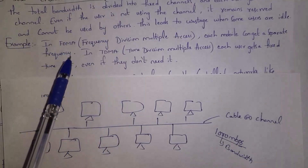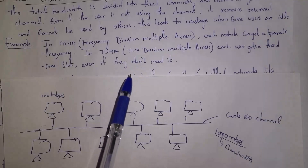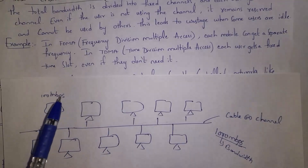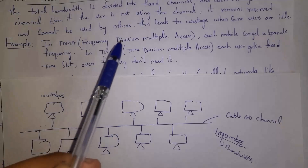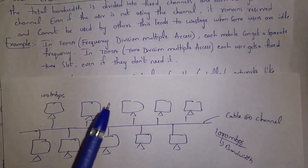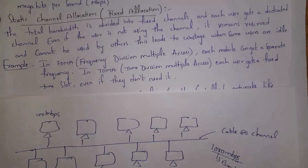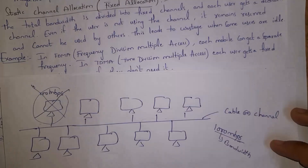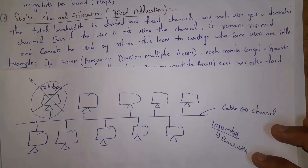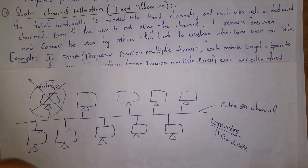FDMA (Frequency Division Multiple Access) and TDMA (Time Division Multiple Access) are both examples of static channel allocation. In FDMA, frequencies are divided into smaller frequencies and each user gets one. In TDMA, time is divided into smaller time slots and each user gets one slot. However, in static channel allocation, if a user doesn't use their assigned bandwidth, that bandwidth is wasted, so it is suitable only for smaller networks.